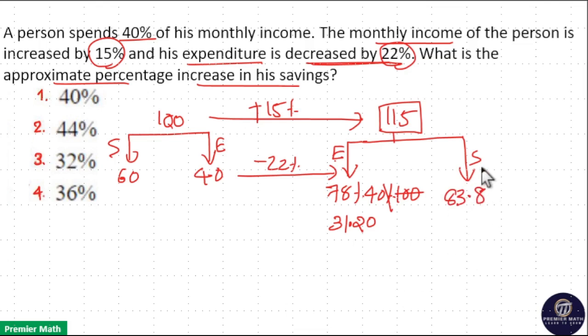Now, new savings is Rs. 83.8 means here the increment is from this initial savings which is Rs. 60. So, Rs. 60 to Rs. 83.8 increment is Rs. 23.8. So, this Rs. 23.8 increment is out of this initial saving 60. So, convert it into percentage.